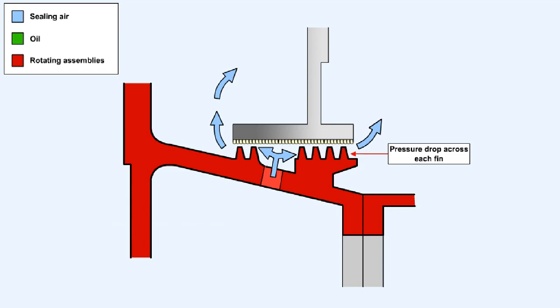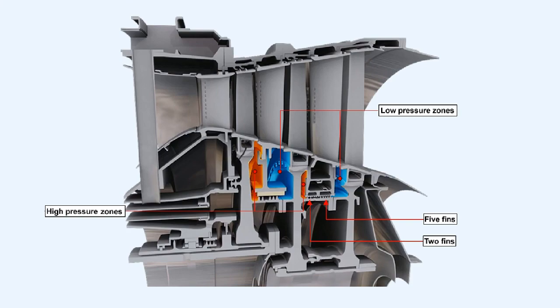Interstage seals are used to either prevent or control leakage of air between sections of the engine which are operating at different pressures. During operation of the interstage labyrinth seal, there is a pressure drop across each fin, which results in a restricted flow of air from one side of the seal to the other. The amount of pressure dropped across the seal depends upon the number of fins over which the air must pass.